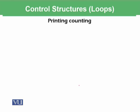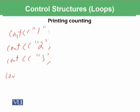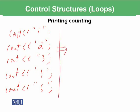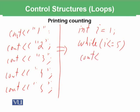Let's have an example of printing the counting. One way would be cout 1, cout 2, cout 3, cout 4, and cout 5. As you can see, all 5 instructions just write the counting. Now let's try to write it using a loop: int i is assigned 1, while i is less than or equal to 5, cout i, and i is assigned i plus 1. Since there are two statements, we need to write them in curly brackets.